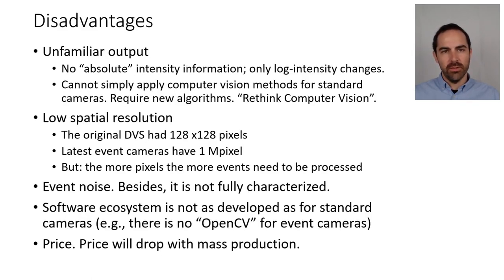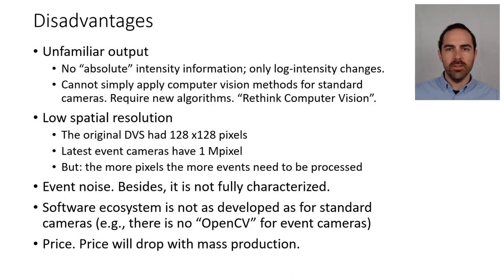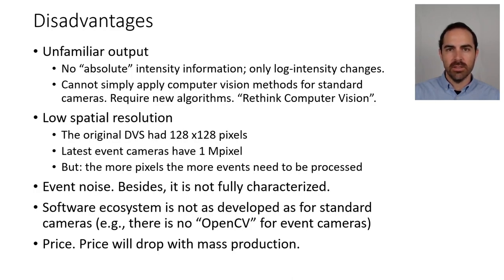What are the disadvantages? The sensor has an unfamiliar output. Because there is no absolute intensity information, only log intensity changes, we cannot simply apply computer vision algorithms from standard cameras — we require new algorithms. Basically, this means that we have to rethink computer vision. All that we have been studying has assumed that visual information is given in the form of a sequence of images, and that's no longer the case. Now we have instead a stream of asynchronous events, and we should rethink the way we extract information from such intensity changes.